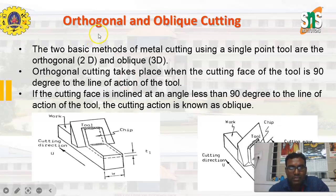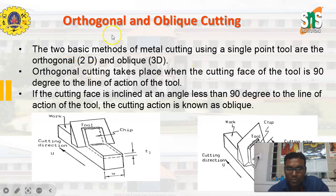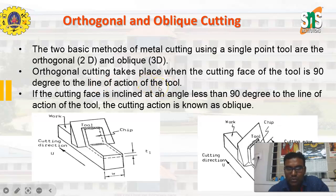What is orthogonal and oblique cutting? These are the two types of cutting used with a single point cutting tool. The two basic methods of metal cutting using a single point cutting tool are orthogonal cutting — that means 2D cutting — and oblique cutting — that means 3D cutting. In orthogonal cutting, it takes place when the cutting face of the tool is at 90 degrees to the line of action of the tool.